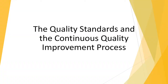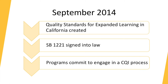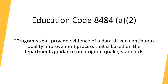The quality standards and the continuous quality improvement process: the quality standards for expanded learning in California were created in September 2014. In that same month, Governor Jerry Brown signed SB 1221 into law, which created a new requirement for after-school programs to implement a continuous quality improvement process. This new requirement can be found in Education Code 8484(a)(2), which states programs shall provide evidence of a data-driven program quality improvement process based on the department's guidance on program quality standards. Simply put, programs must show proof that they are implementing a continuous quality improvement process while actively engaging with the quality standards.